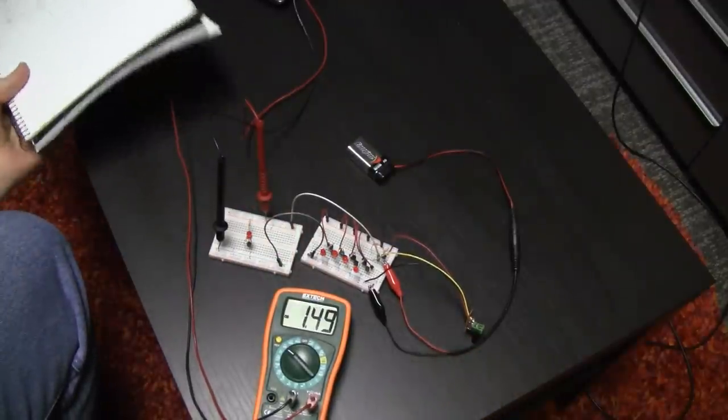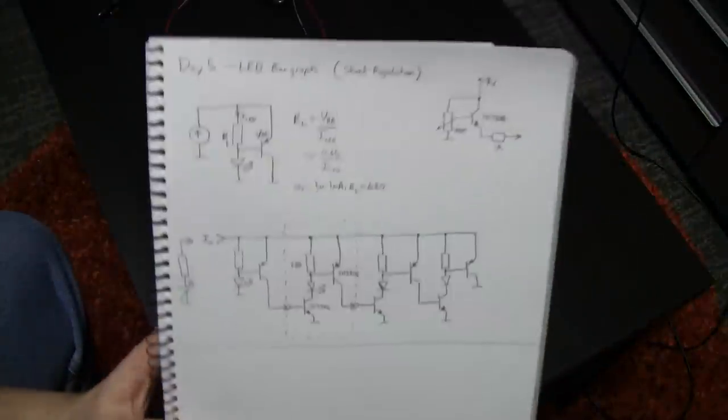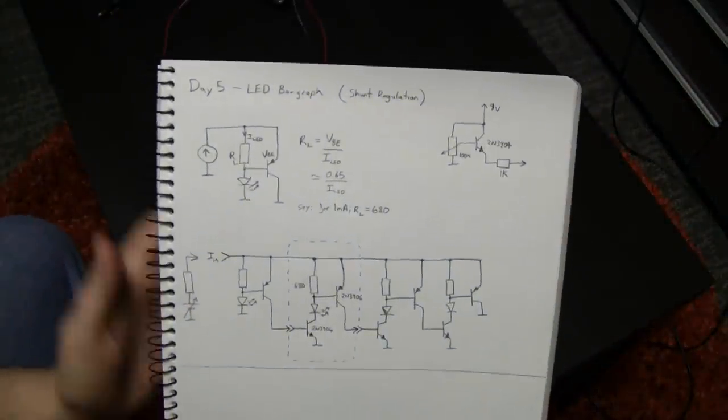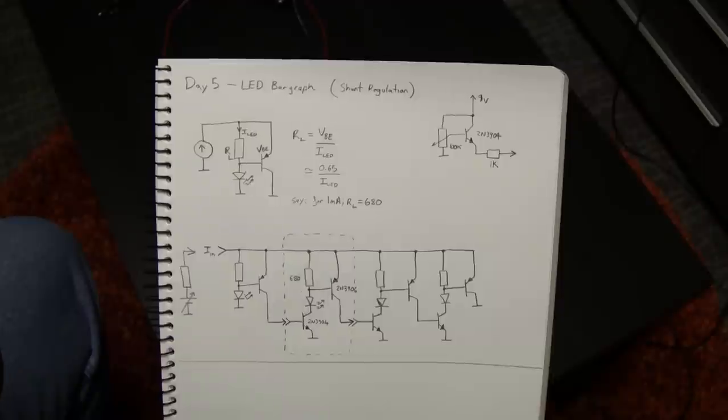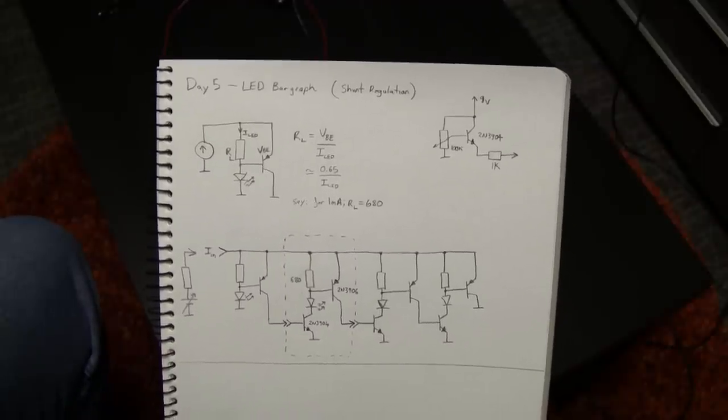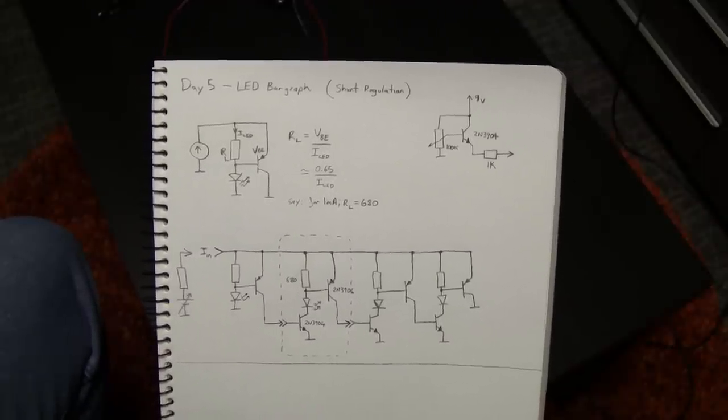Alrighty. That was a quick and simple one for today. Easy to build. These general kind of current control circuits with BJTs are super handy and are the basics of many of the projects that I'll do.